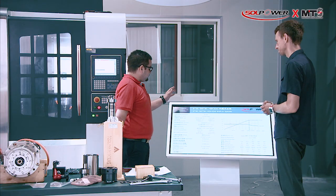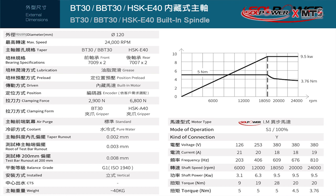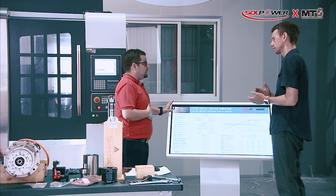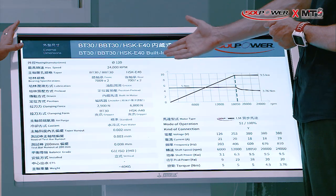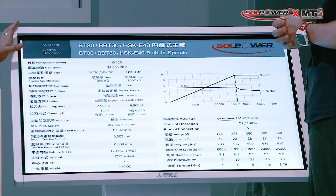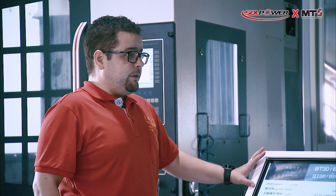Before we start building a prototype, we have to determine three things. First, the interface and housing — how big it is in terms of size. Second, the maximum speed of the motorized spindle based on customer requirements. For example, 24,000 RPM — though at Sol Power we can reach up to 40,000 RPM, depending on the taper and customer requirements.